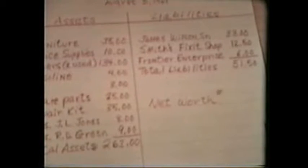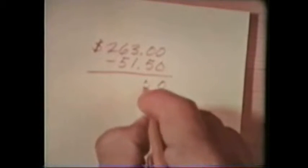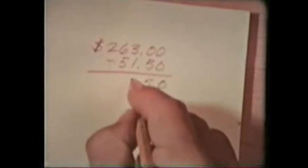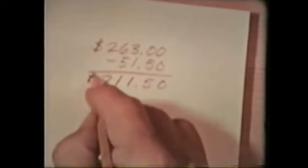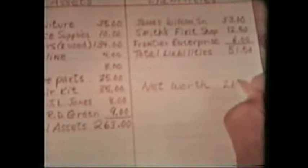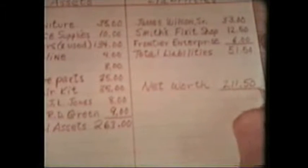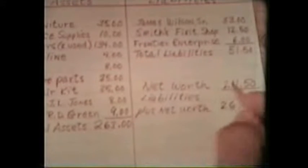Knowing his assets — $263 — Jim subtracts his liabilities — $51.50. The difference, $211.50, is his net worth. Jim adds the net worth to the liabilities. As you can see from this balance sheet, assets equals liabilities plus net worth.